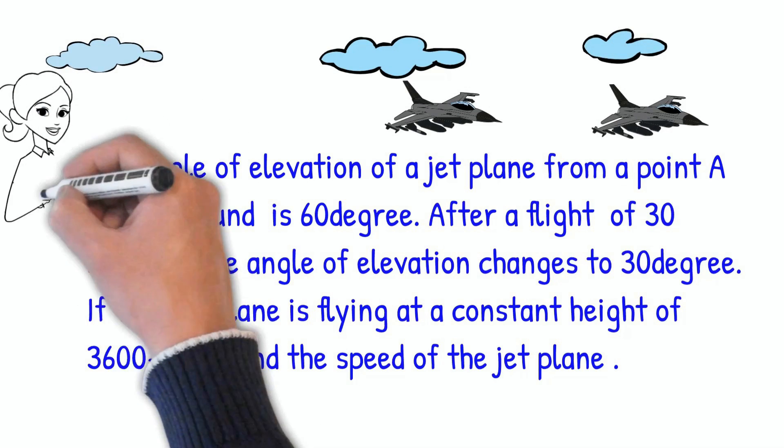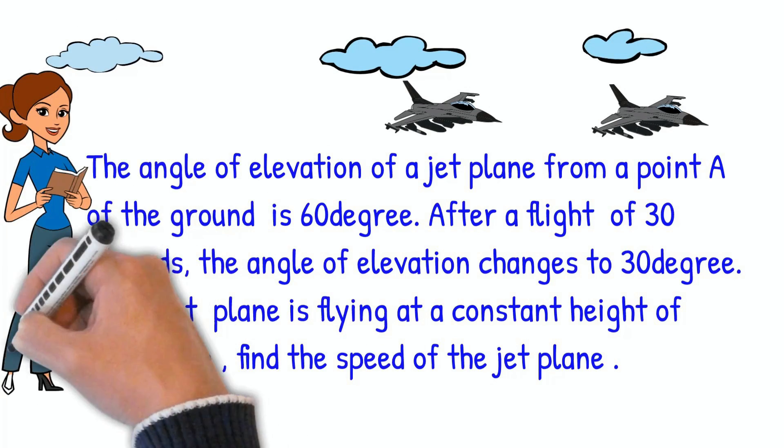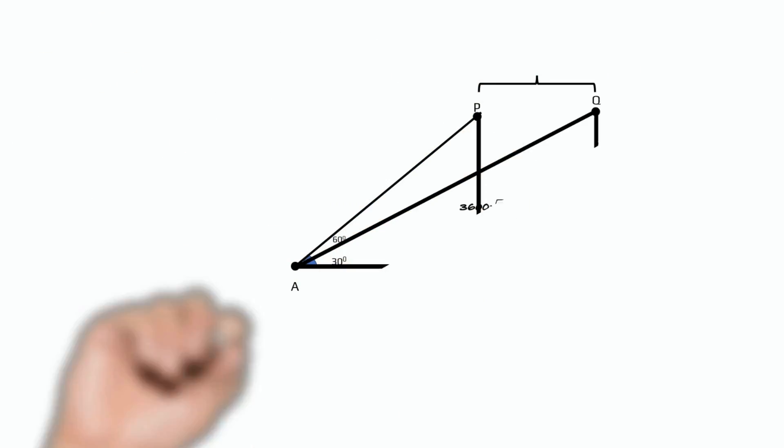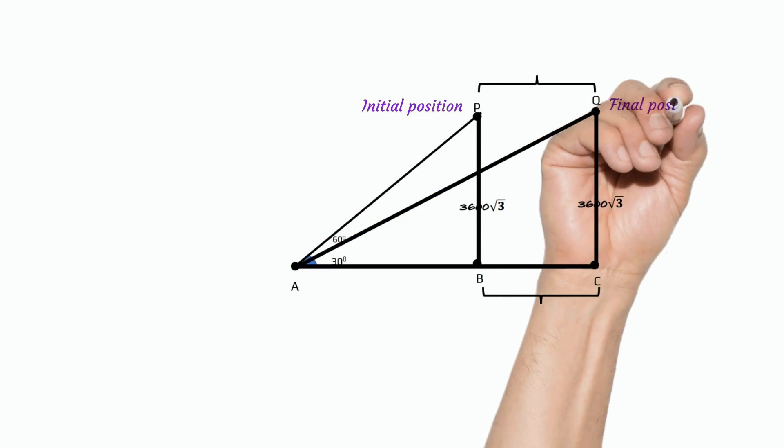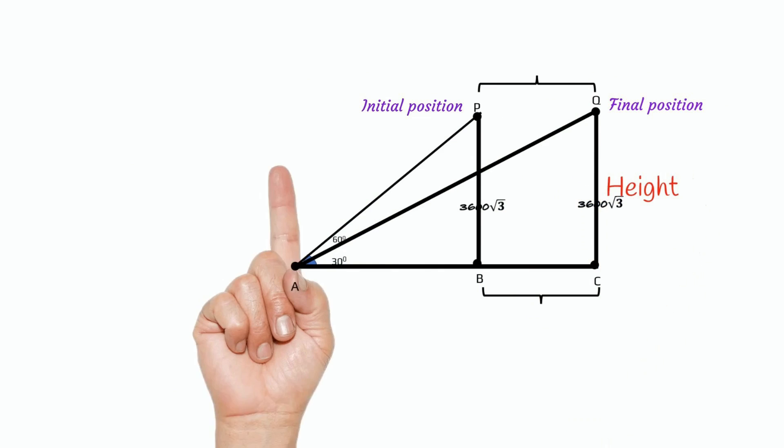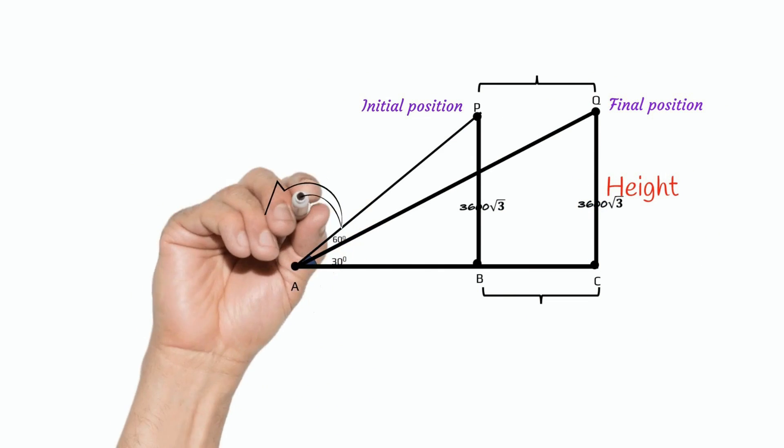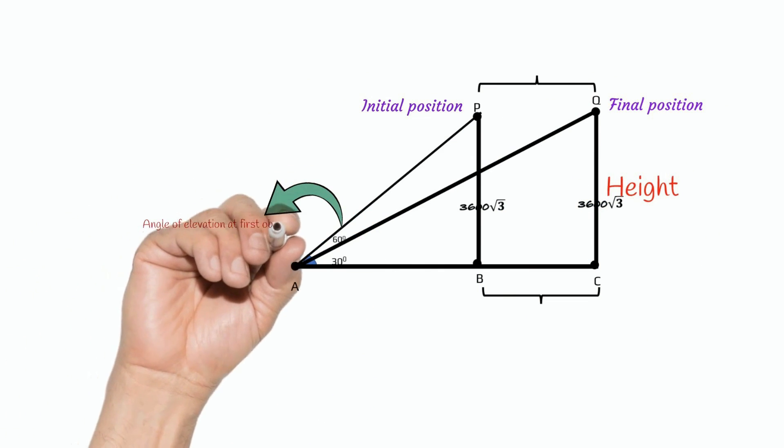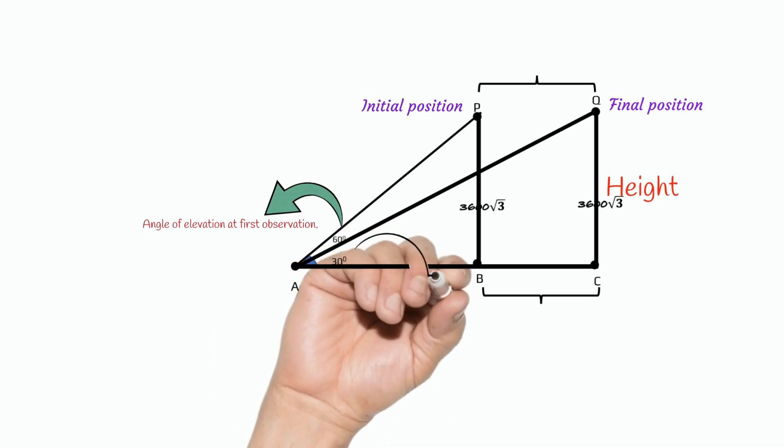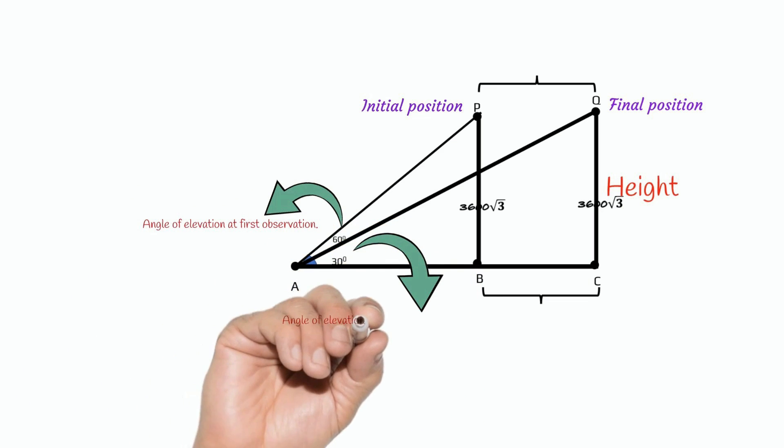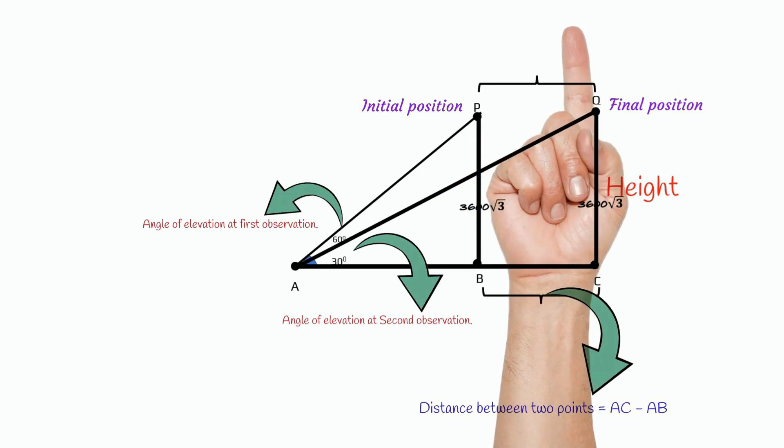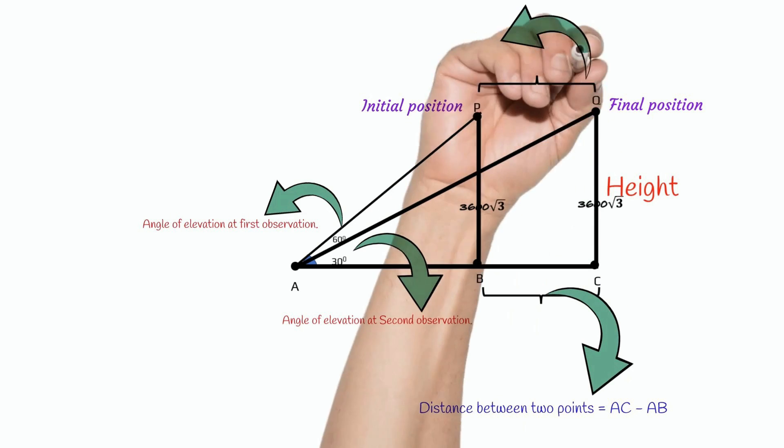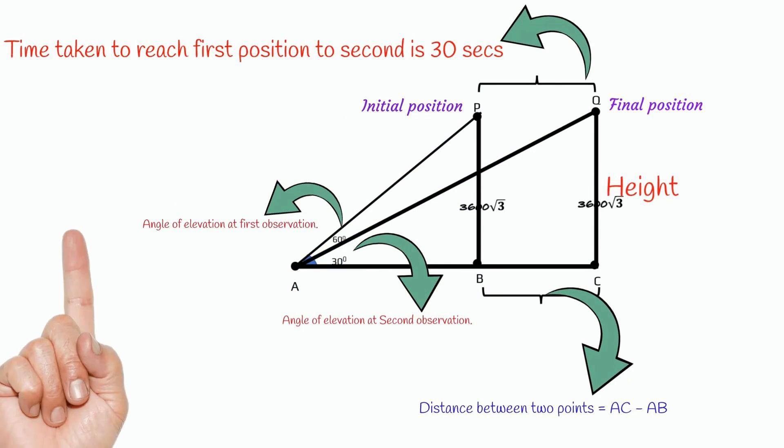Let us see the question in detail. Initial position, final position of the plane, height of the plane from the ground. Angle of elevation 60 degrees. Angle of elevation 30 degrees. Distance between two positions. Time taken for the flight from first position to second is 30 seconds.